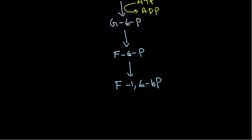From fructose-6-phosphate, a second phosphate must be added — the first carbon now needs a phosphate group. Again, ATP donates that phosphate, adding it to the first carbon of fructose, converting it into fructose-1,6-bisphosphate.